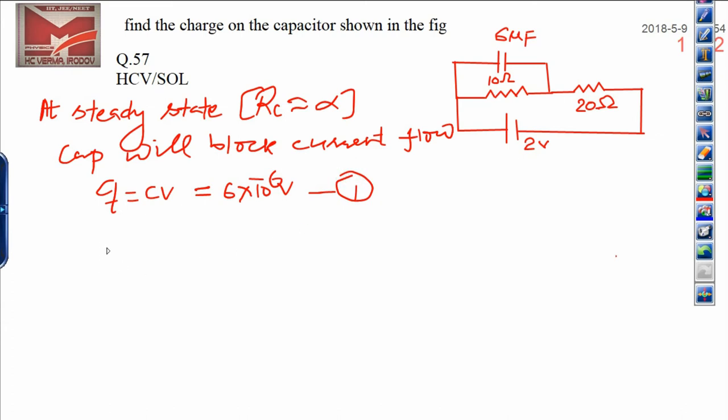Let us see how to calculate the total current. Total current can be calculated by I = V/R. V is 2 and R is 30, so I = 2/30 = 1/15 ampere.